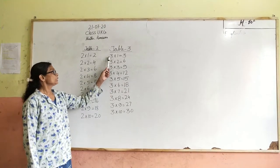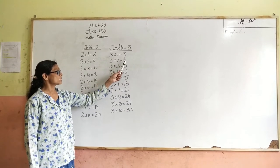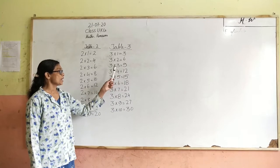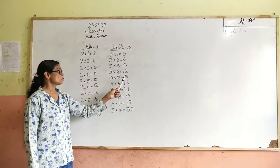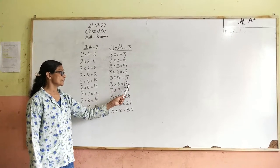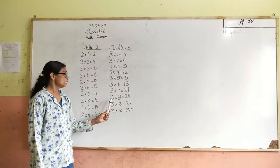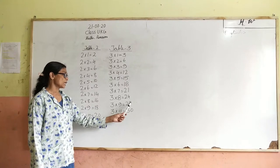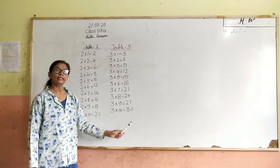One more time. 3 ones are 3. 3 twos are 6. 3 threes are 9. 3 fours are 12. 3 fives are 15. 3 sixes are 18. 3 sevens are 21. 3 eights are 24. 3 nines are 27. 3 tens are 13.